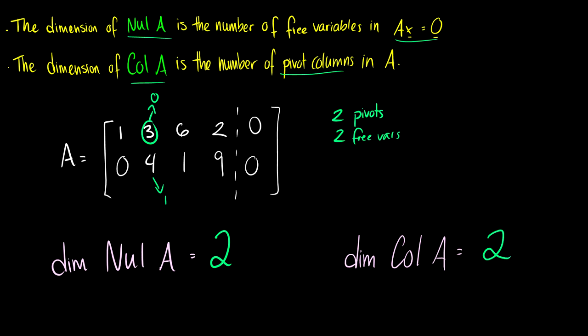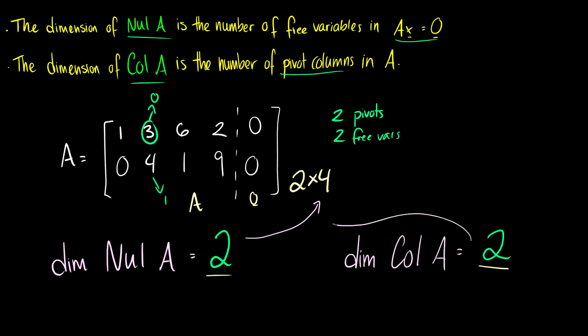Note that this is a 2 by 4 matrix. The dimension of the null space is 2, and the dimension of the column space is 2. So we can infer that maybe the dimension of the null space and the dimension of the column space has to equal the number of columns. We'll take a look at this claim later — we may prove or disprove it.